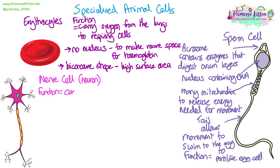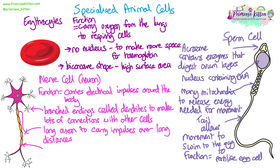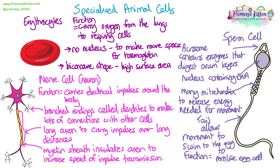The last animal cell we're going to look at is the nerve cell, or neuron. Its function is to carry electrical impulses around the body as part of the nervous system. It has lots of branched endings called dendrites, allowing it to make lots of connections with other nerve cells to pass electrical impulses from one cell to another. It has a long central part known as the axon, which allows it to carry impulses over long distances. It also has a myelin sheath — a fatty layer around the axon — which increases the speed at which those impulses travel.